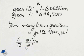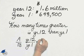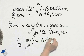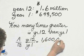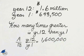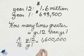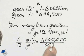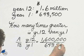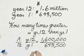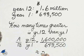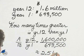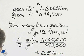$1.6 million means $1,600,000. So $1,600,000 divided by $643,500 — this is approximately 2.5 times greater.